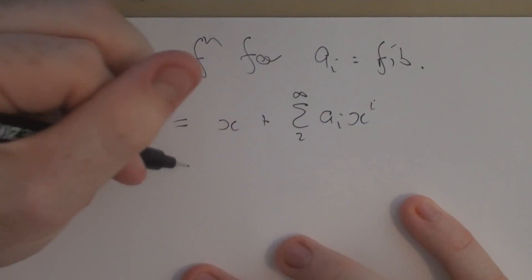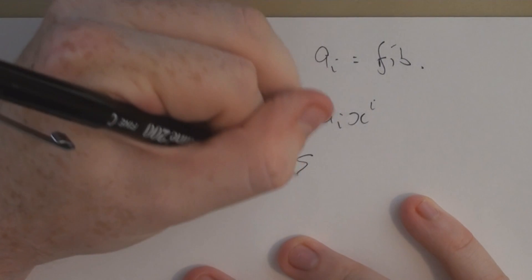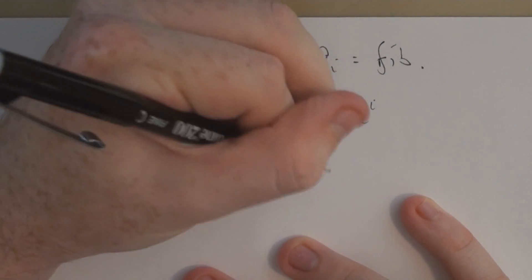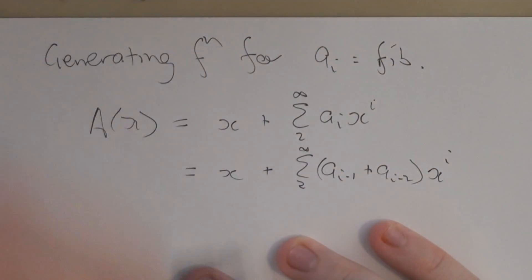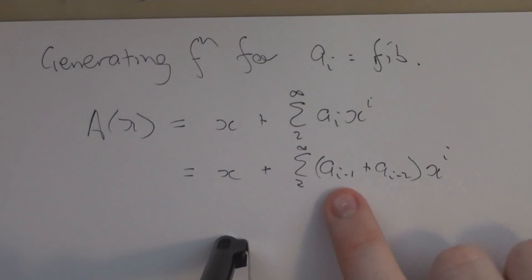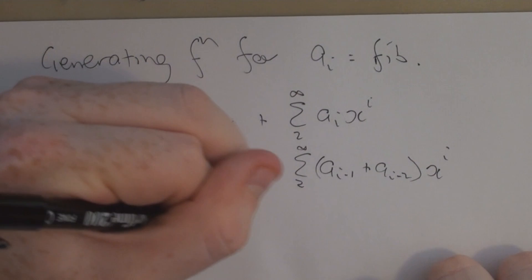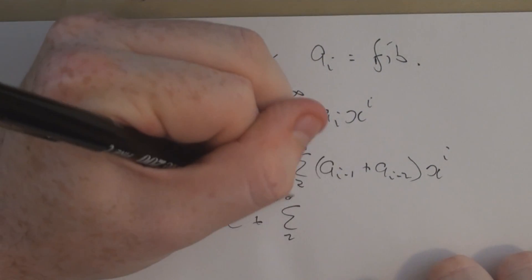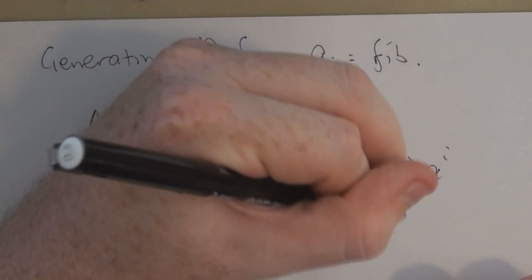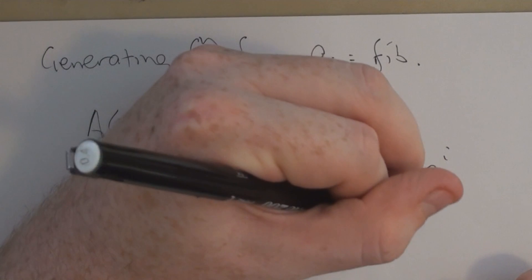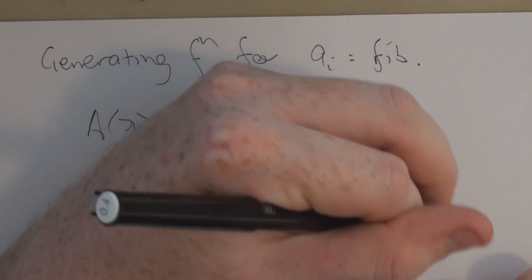But we know stuff about a_i, right? We can make this smaller. We can say this is x plus the sum from 2 to infinity of a_{i-1} plus a_{i-2} times x to the i. And if we do a little fudging, what we can find is that we've kind of got a Fibonacci sequence in here and here, just kind of hidden. It's pretty cool. So let's split these up. This is now the sum from 2 to infinity of a_{i-1} x to the i plus the sum from 2 to infinity of a_{i-2} x to the i.